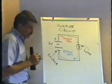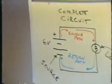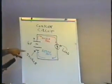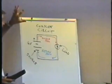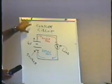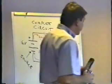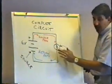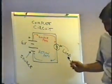We're going to talk a lot about source path and return path as we go through the class. When you have the source, the load, the source path, and the return path, you have what we call a complete circuit. In order to have a complete circuit, you need to have all these things working for you — obviously you wouldn't expect this thing to light up if there was just one wire hooked up.